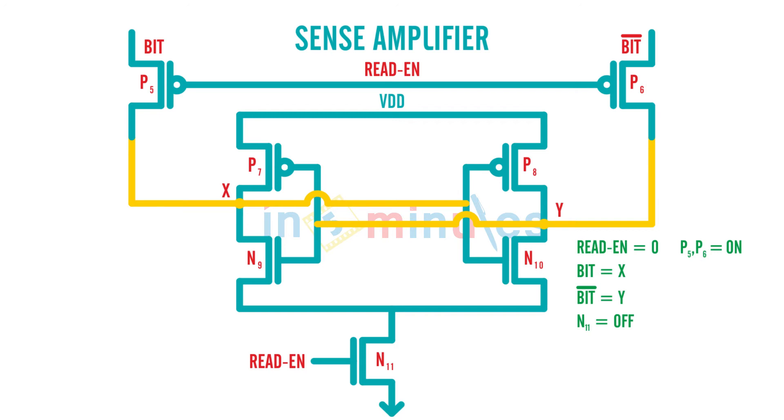So nothing in this inverter is going to get triggered. Now I want to start my read operation, so what I am going to do is make my read enable equal to 1. When that happens, my transistors P5 and P6 are eliminated from my circuit.